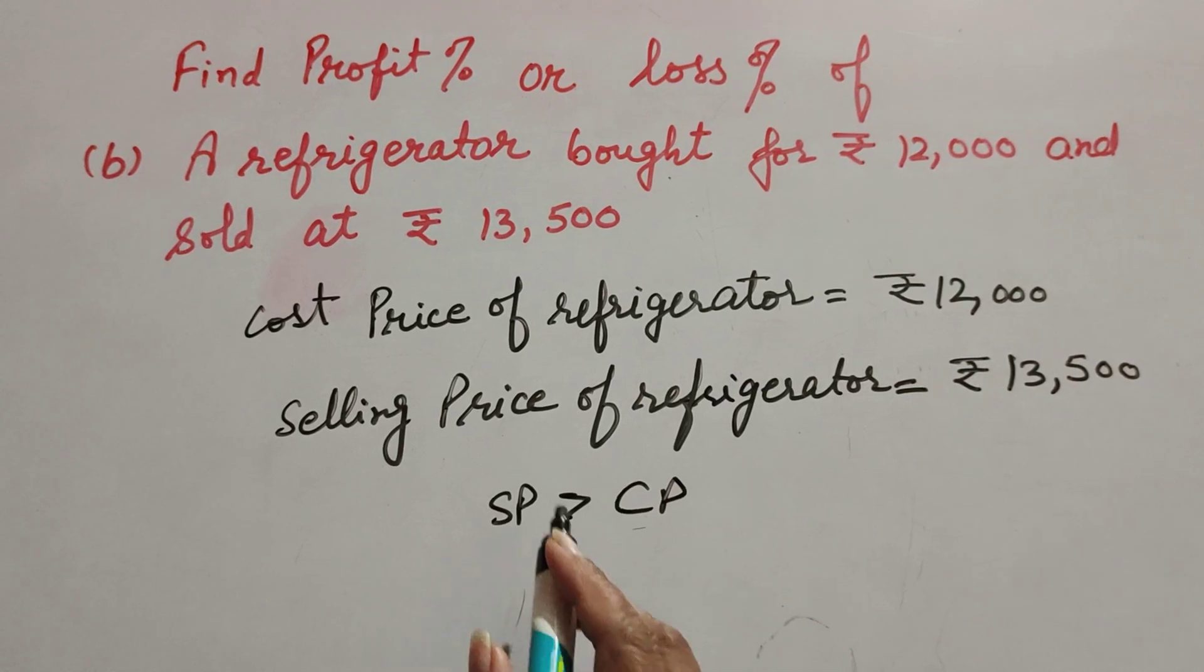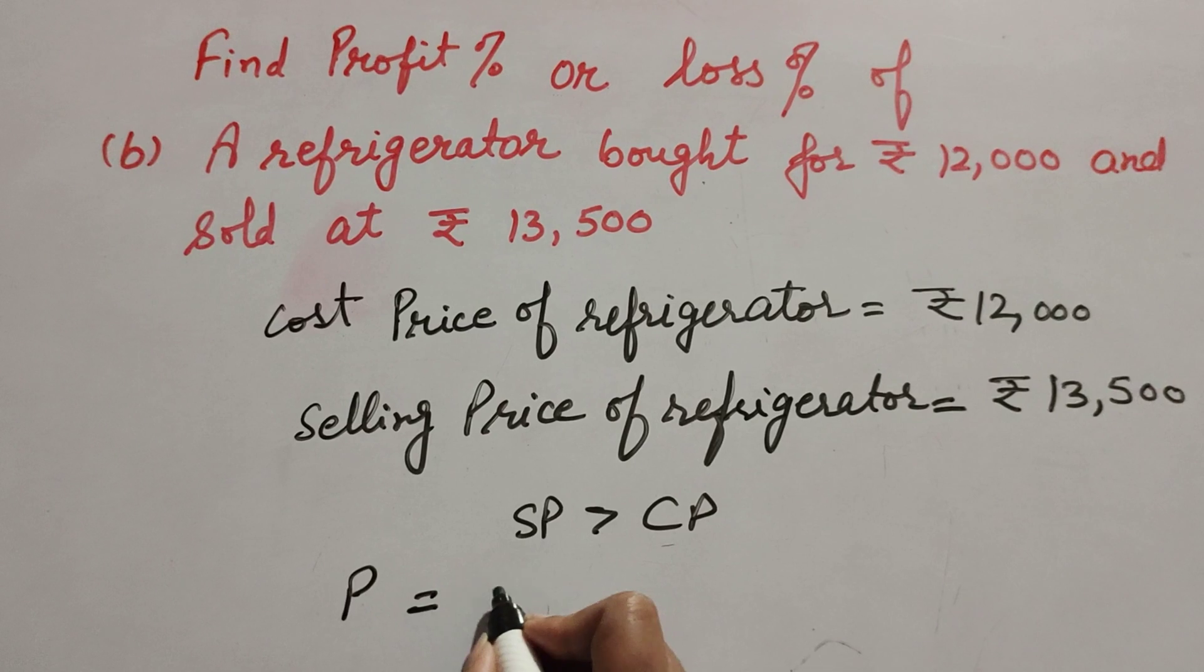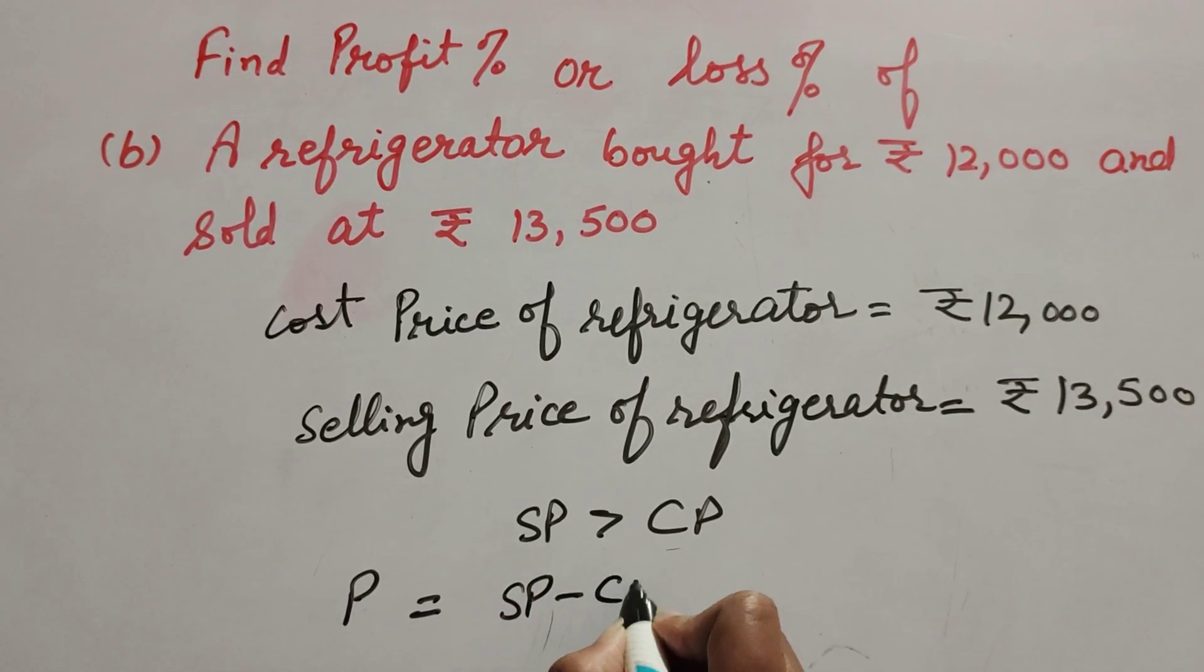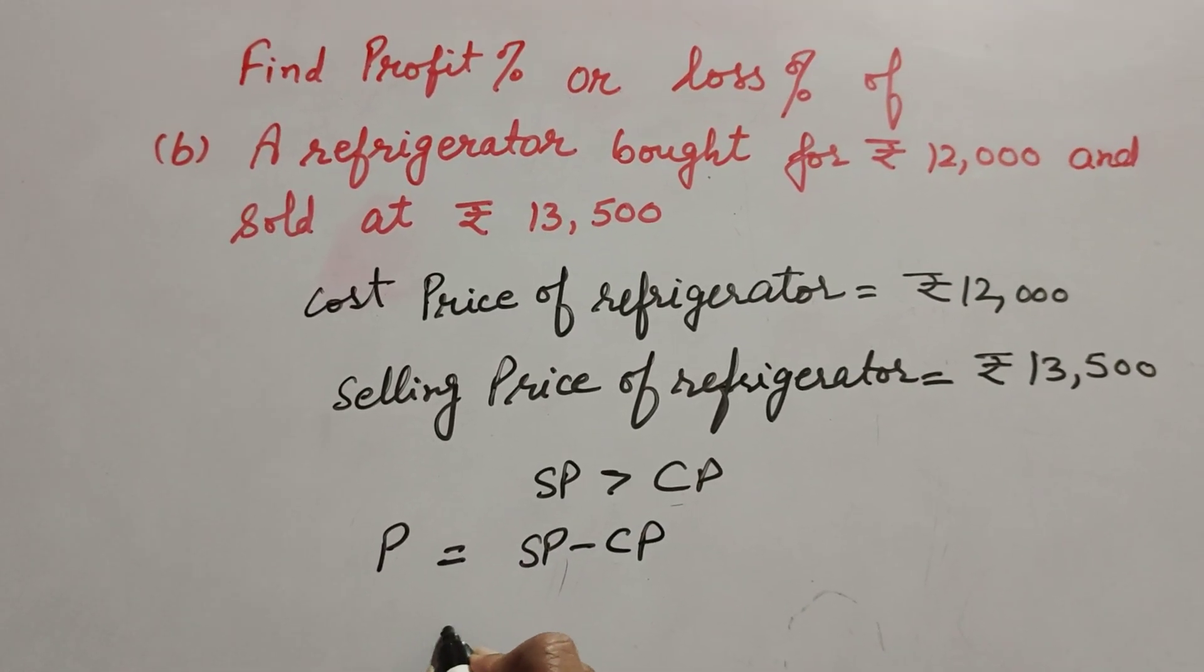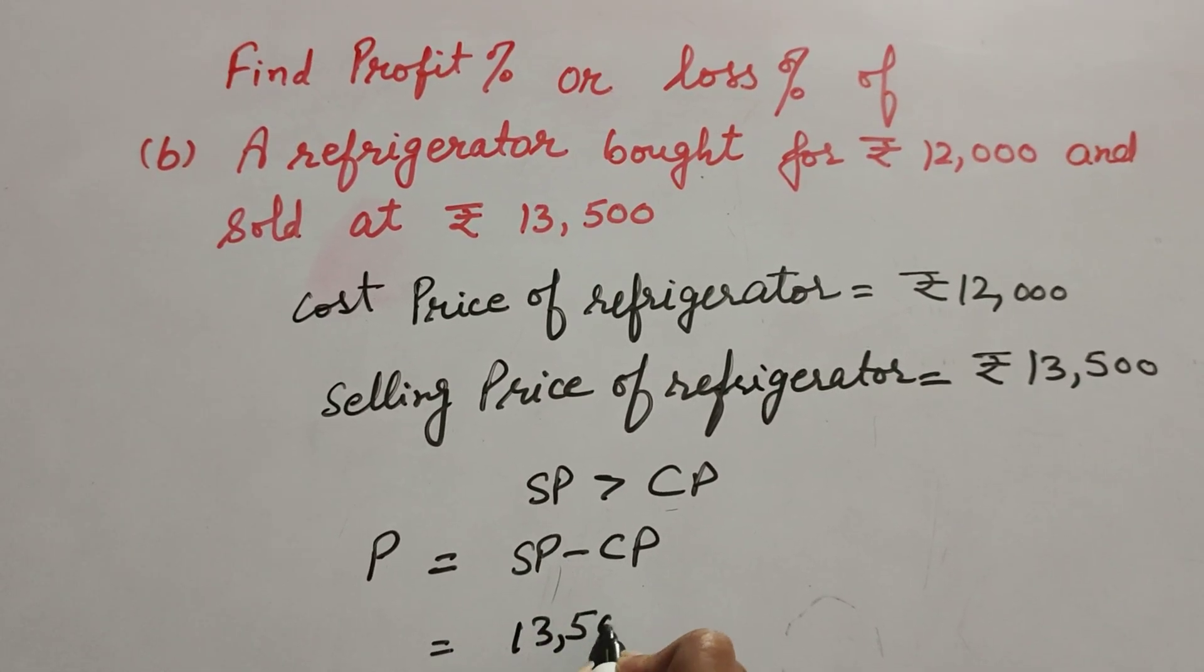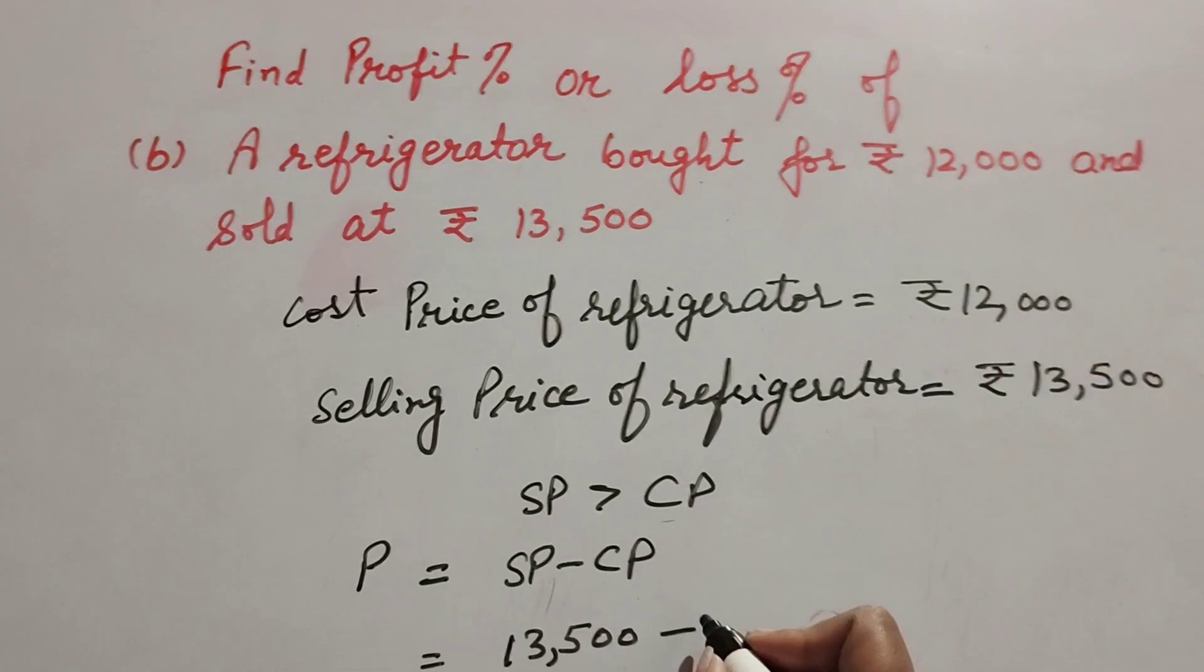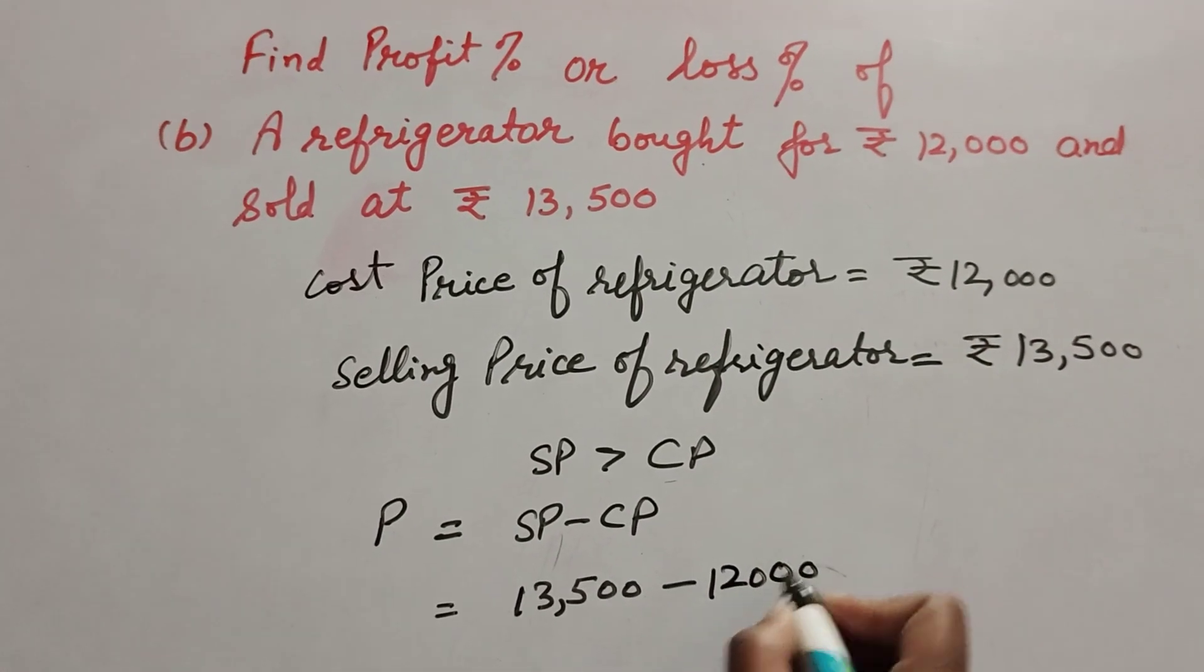When selling price is greater than cost price, we get profit. Profit equals selling price minus cost price. That is Rs 13,500 minus Rs 12,000.